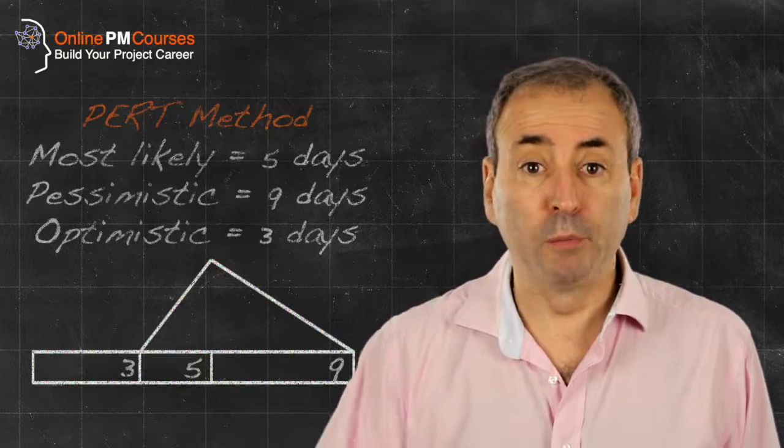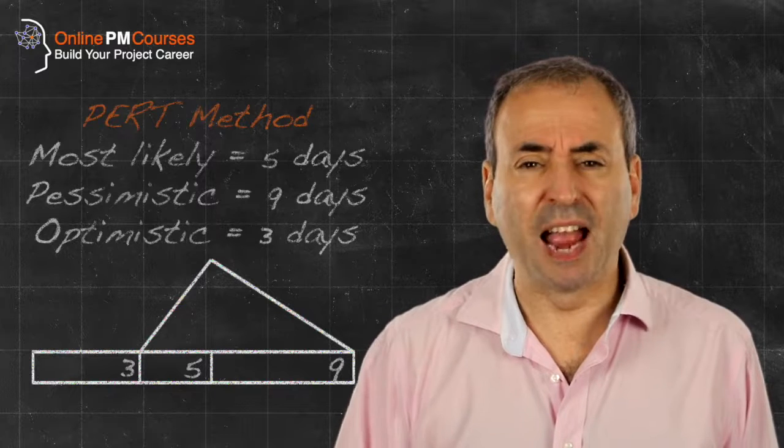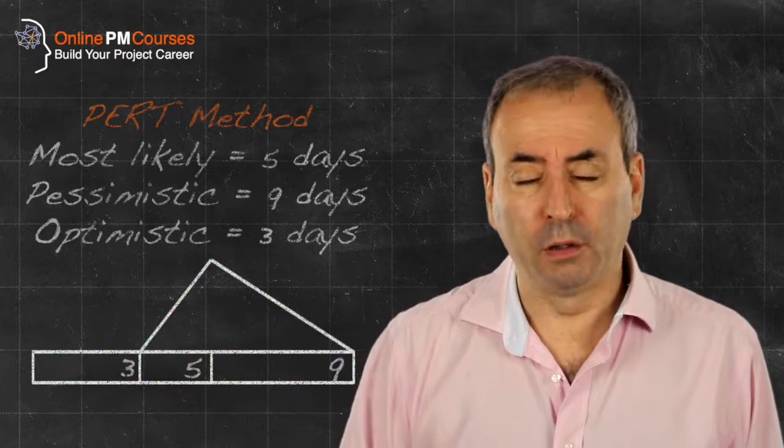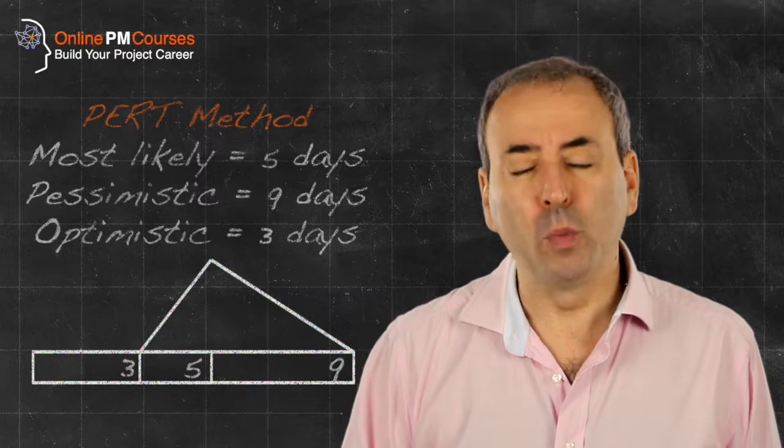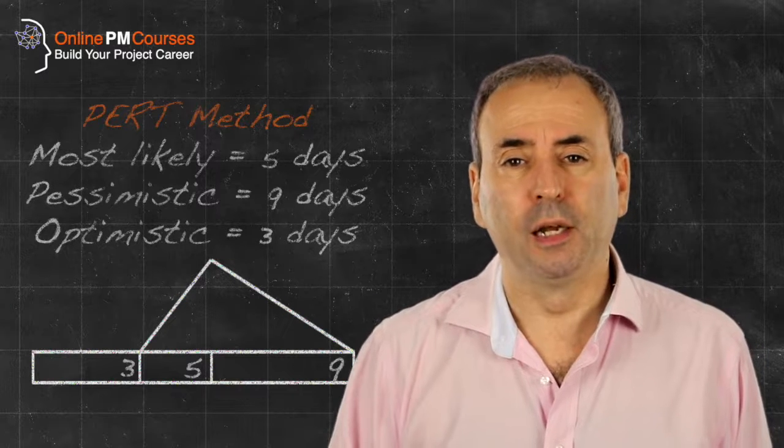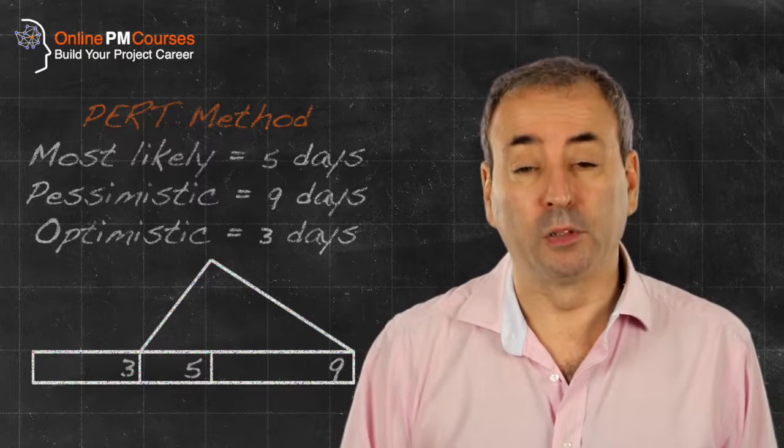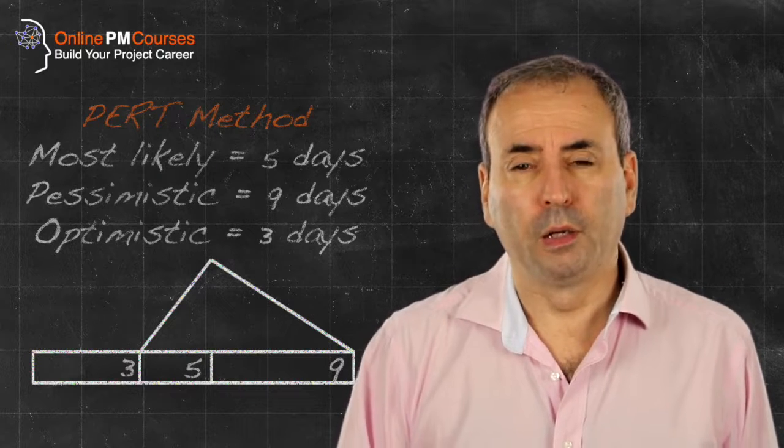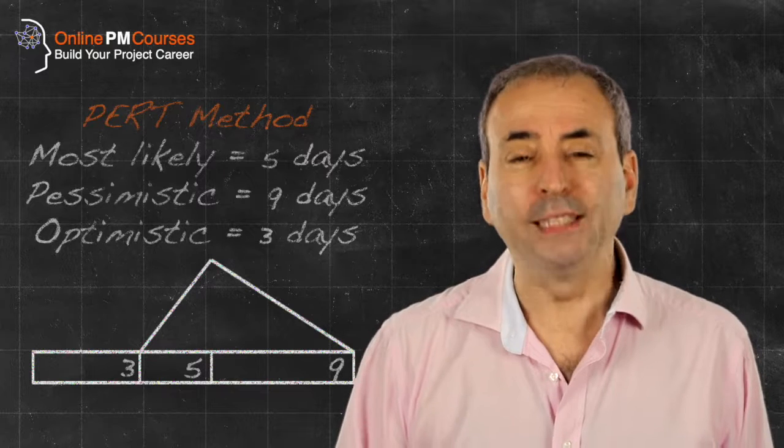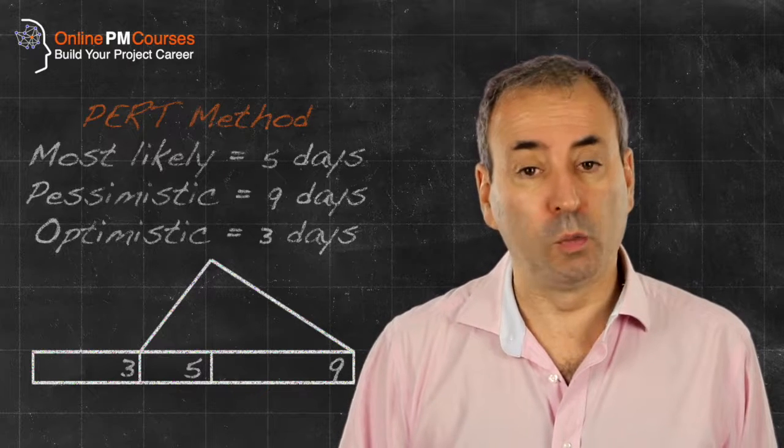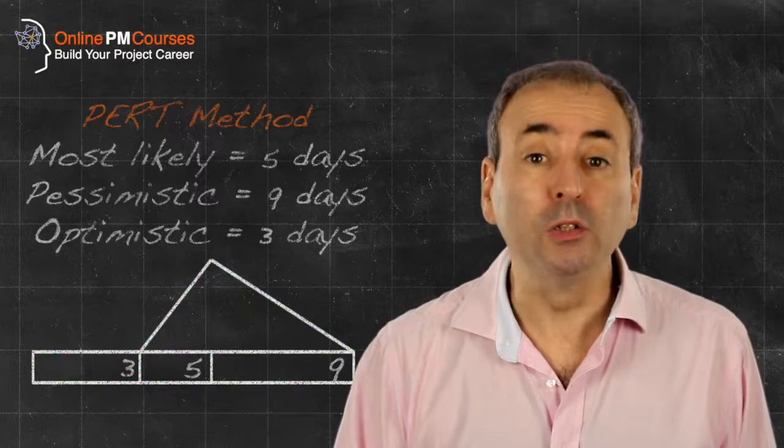As a result of some simple mathematics we can estimate an average duration for the task based on our three point estimate. The way that we do that is we average the three estimates: the optimistic, the pessimistic, and the most likely.